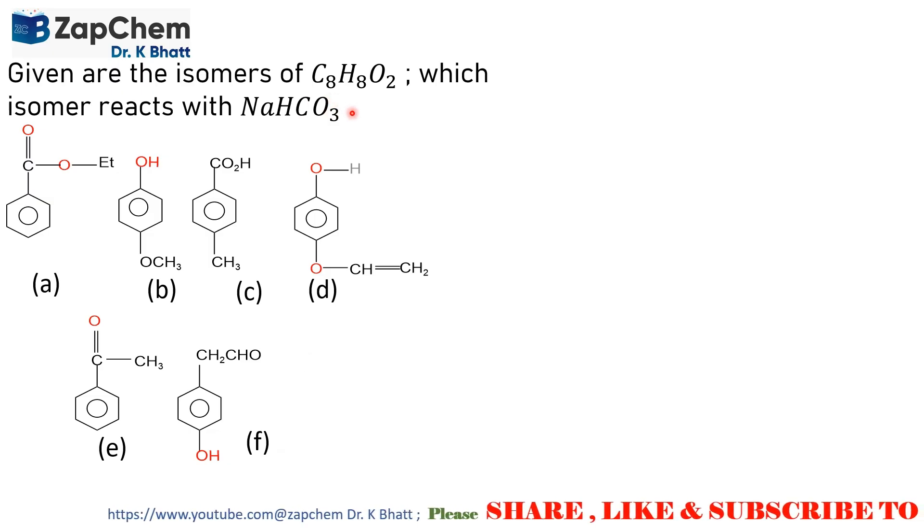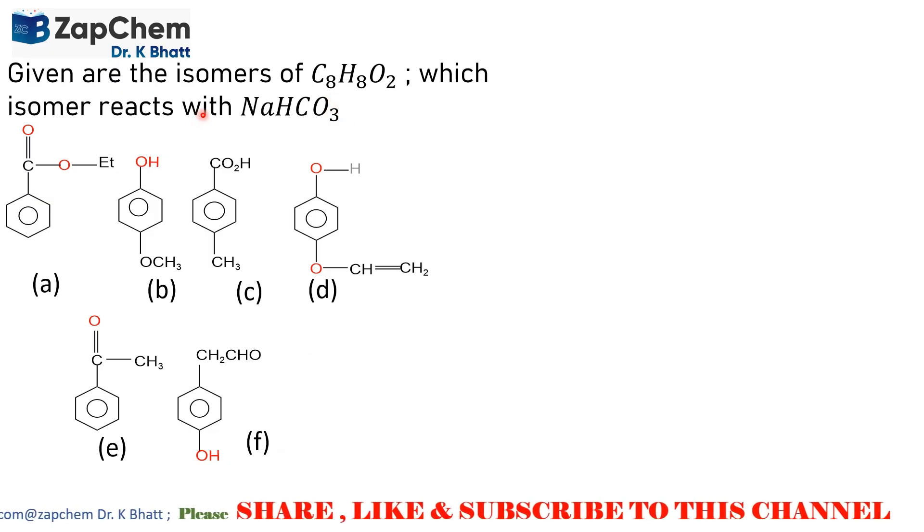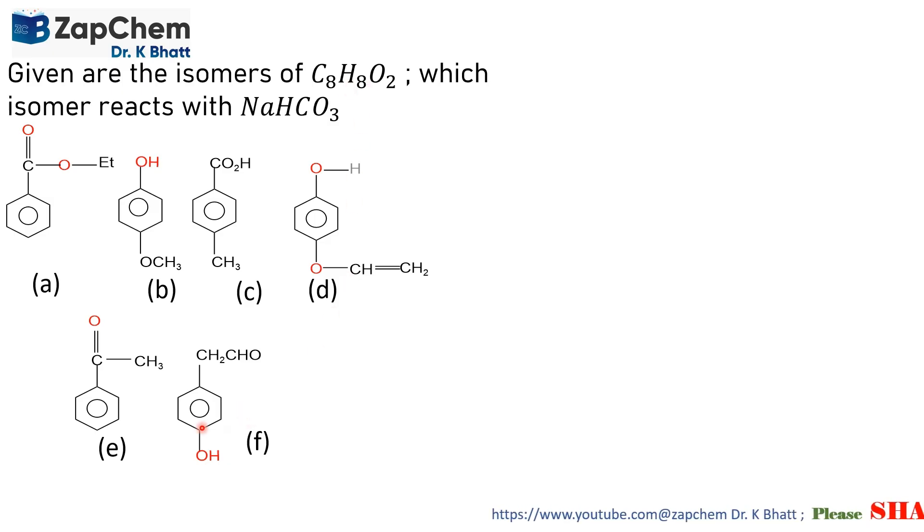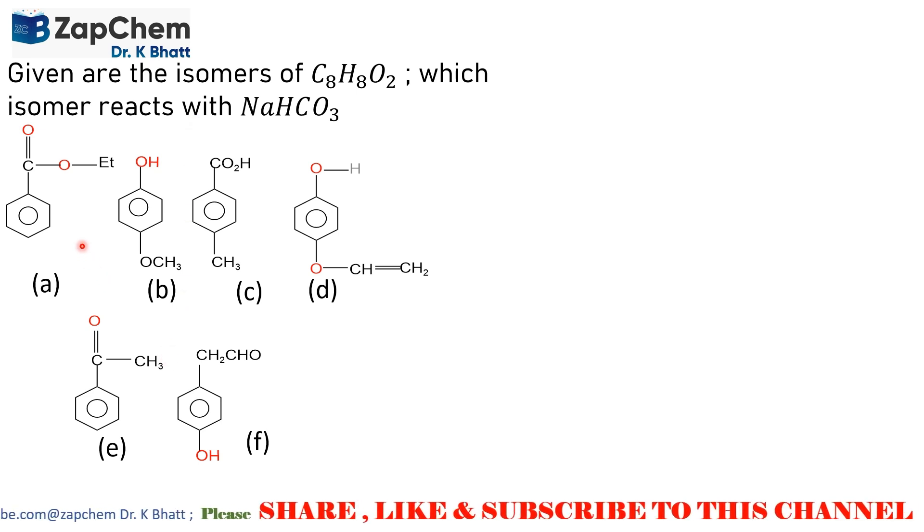Firstly, we need to check whether the molecular formula and the structural formula are related with C8H8O2. We find that in all these cases, the structural formula corresponds to this molecular formula, so the isomers are correct.